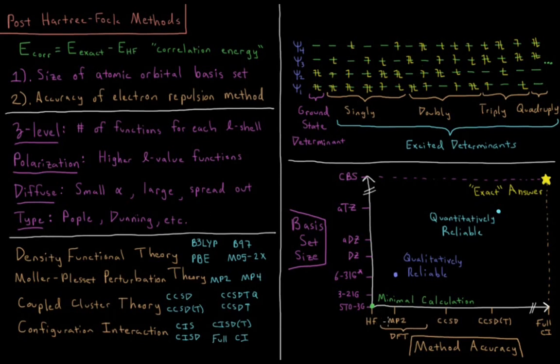Density functional theory on this graph, it doesn't really fall in kind of necessarily anywhere. Each approximation is different, and some are very good, some are very bad. So somewhere between Hartree-Fock and CCSD is typically where they fall, although there are certainly bad ones that are even worse than Hartree-Fock.